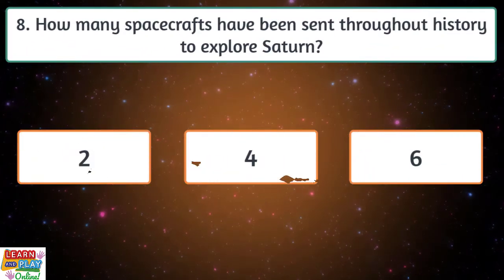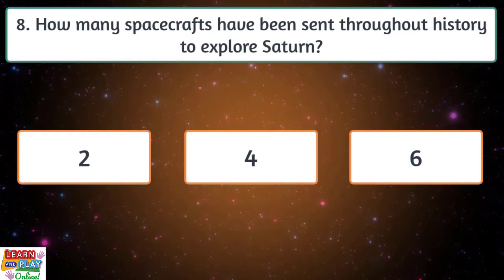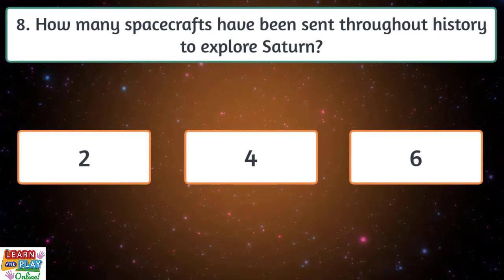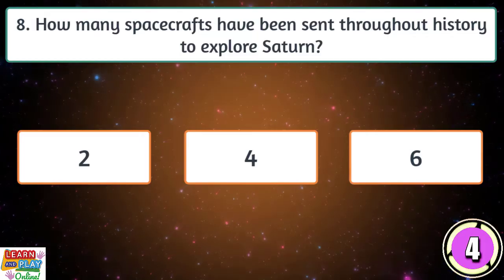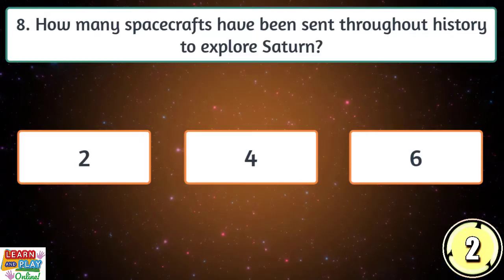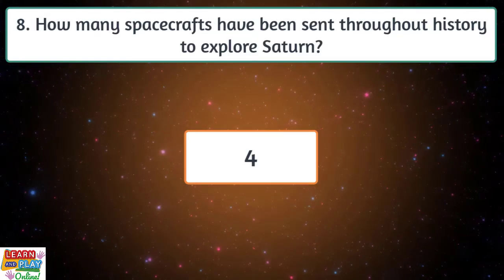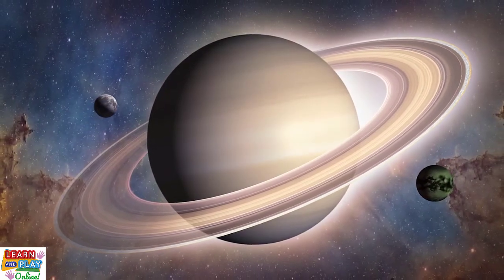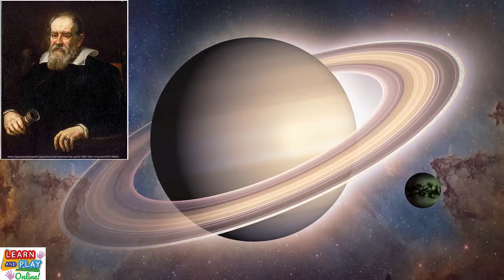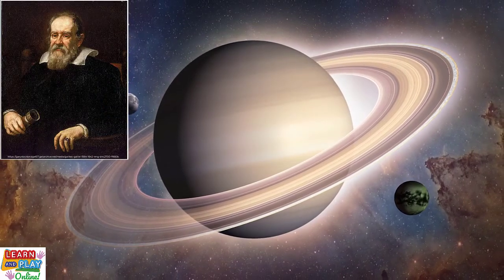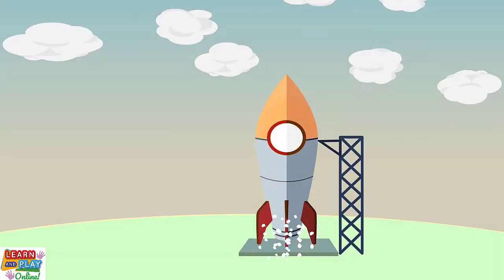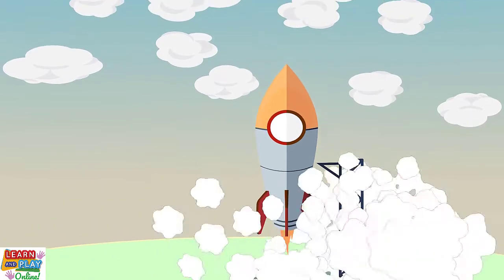Question 8. How many spacecrafts have been sent throughout history to explore Saturn? Two, four or six? Saturn was first observed in 1610 by an Italian astronomer by the name of Galileo Galilei through a telescope. Since its discovery and the development of technology, a total of four unmanned spacecrafts have been sent to further explore the planet.